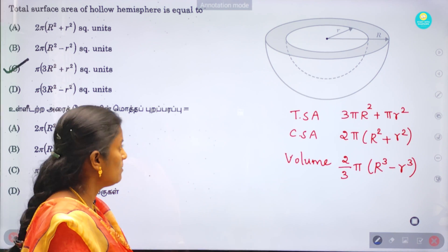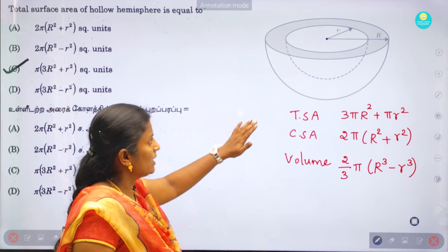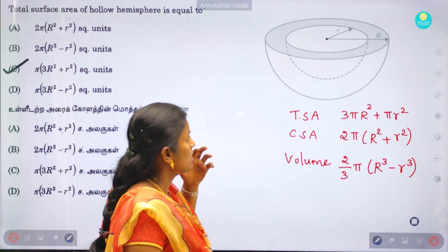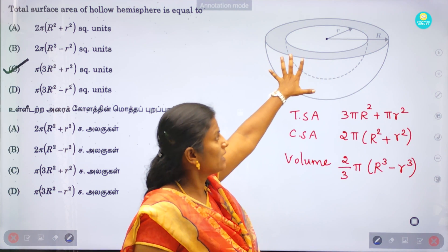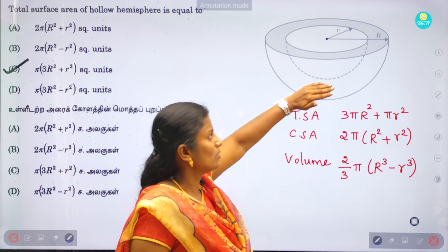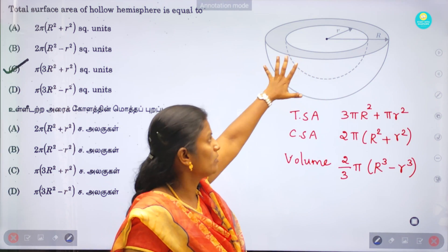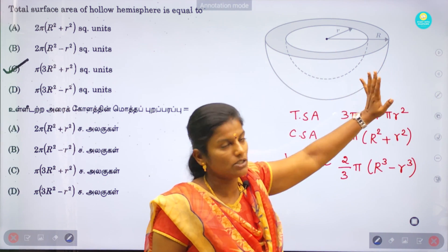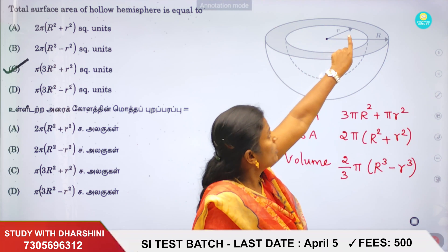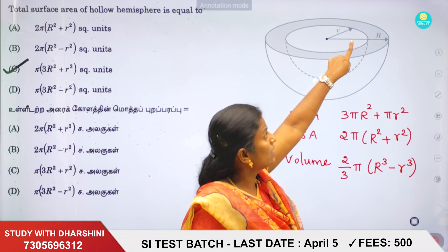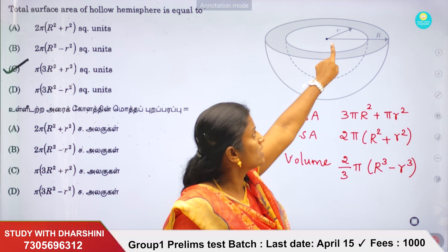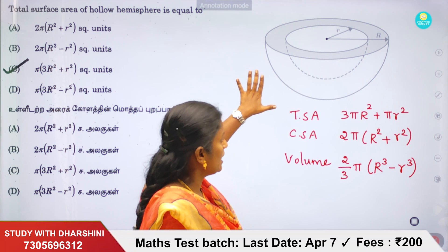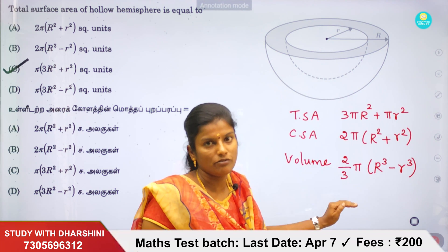Let's look at the formula. This shape is a hemispherical shell — think of it as a thick shell. If you cut the shape, you can see it has an inner radius (small r) and an outer radius (capital R). We will look at the total surface area, curved surface area, and volume.